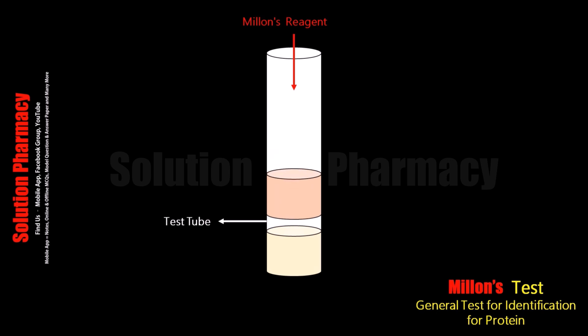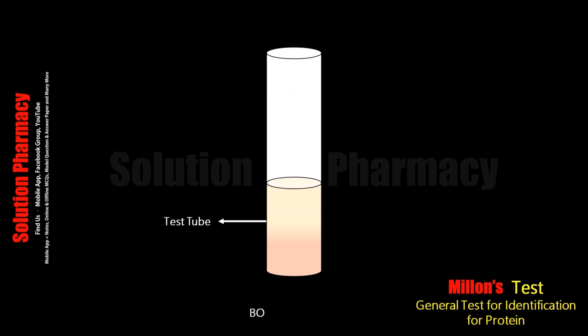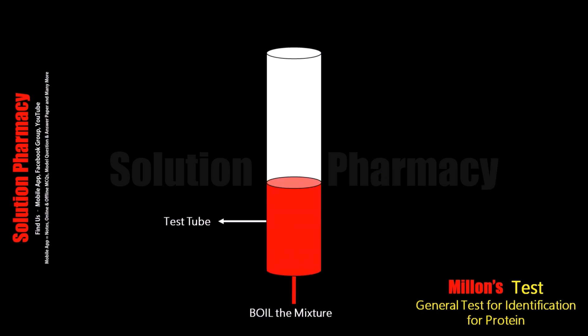After adding Millon's reagent, mix the contents of the test tube. After this, boil the contents of the test tube on the water bath for about 2 minutes. After boiling, cool it. And if we observe a red color in the test tube — if the color of the contents turns red — it means tyrosine-containing protein is present in this sample.